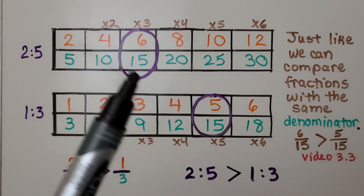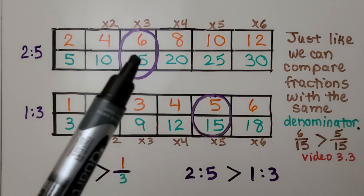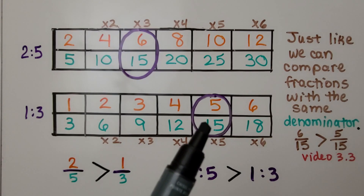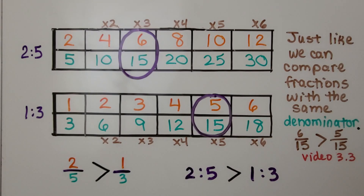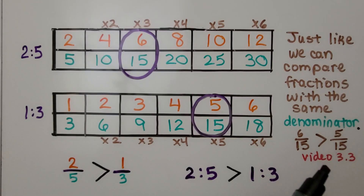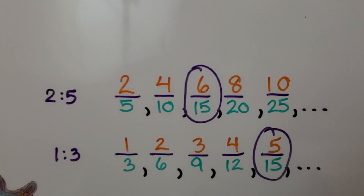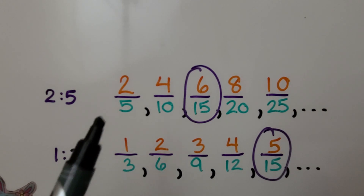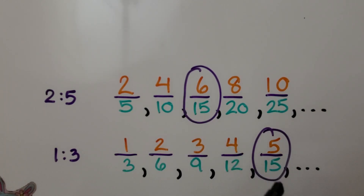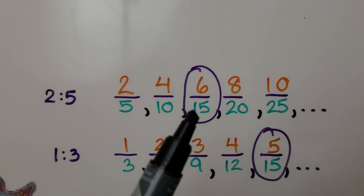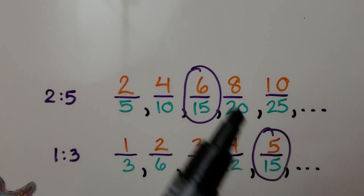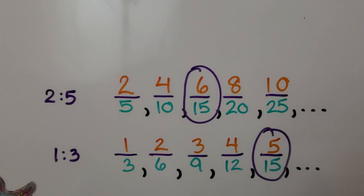Looking at the tables, we have the same denominator — 15 — in both. We can see 6 fifteenths from the first table and 5 fifteenths from the second. Just like comparing fractions with the same denominator, 6 fifteenths is greater than 5 fifteenths. So 2 fifths is greater than 1 third, meaning the ratio 2 to 5 is greater than the ratio 1 to 3.